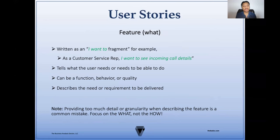Now let's look at the feature, or the what. The feature is written as an 'I want' fragment. For example, 'as a customer service rep, I want to see incoming calls.' This tells us what the user needs or needs to be able to do. It can be a function, behavior, or quality, and it describes the need or requirement to be delivered. One thing to note here is that providing too much detail or granularity when describing the feature is a common mistake. Focus on the what, not the how.